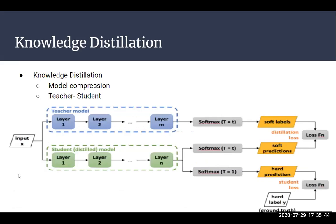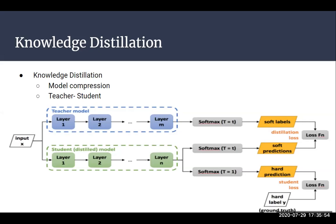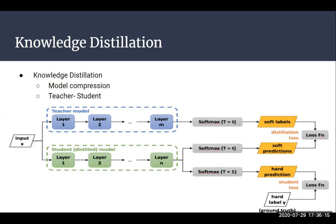To first understand this approach, we have to understand what exactly knowledge distillation is. Knowledge distillation is a process of transferring knowledge from a large network to a small network, or we can say it is a way to compress a large model into a small model. In this approach, the large model is called the teacher model and the small model is called the student model. The teacher model is pre-trained and we train the student model with the help of the teacher model, which is trained on a large amount of data to produce better predictions.